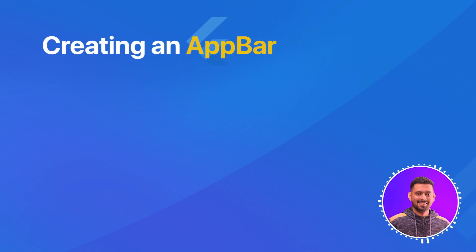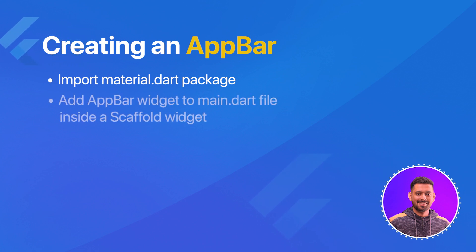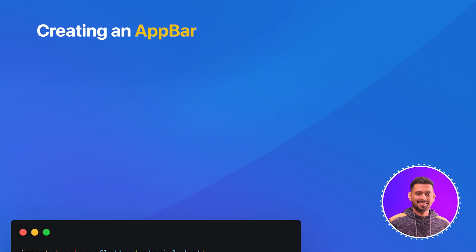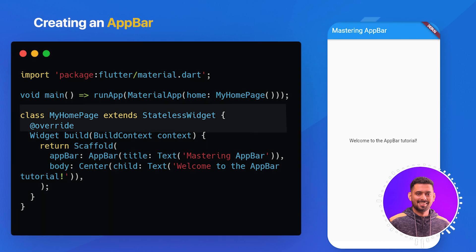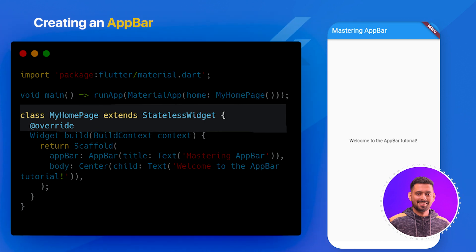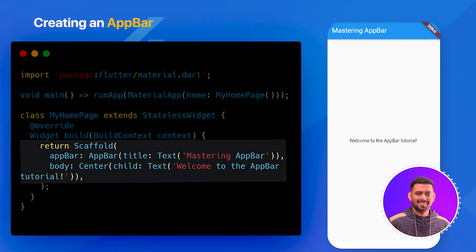To get started with the AppBar, you'll need to import the material.dart package. Let's create a new Flutter project and add the AppBar widget to the main.dart file inside a Scaffold widget. As you can see, we've created a stateless widget called MyHomePage. Inside the build method, we have returned a Scaffold widget with an AppBar. The AppBar has a title which displays our screen title.